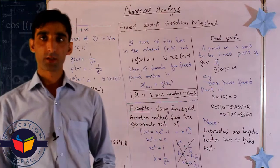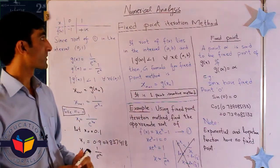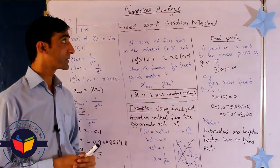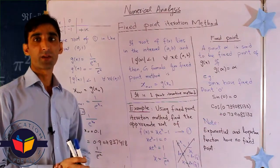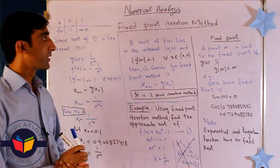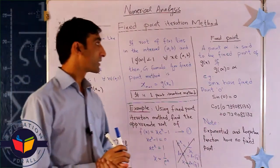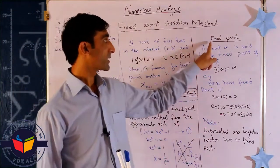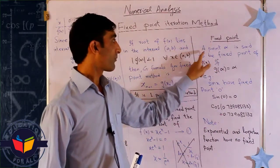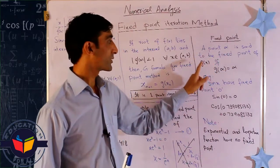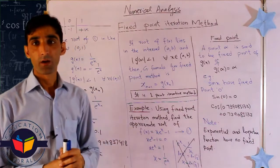Assalamu alaikum warahmatullahi wabarakatuhu. This is a lecture about numerical analysis and today we discuss the fixed point iteration method. The definition of the fixed point iterative method: a point alpha is said to be a fixed point of g(x) if g(alpha) equals alpha.